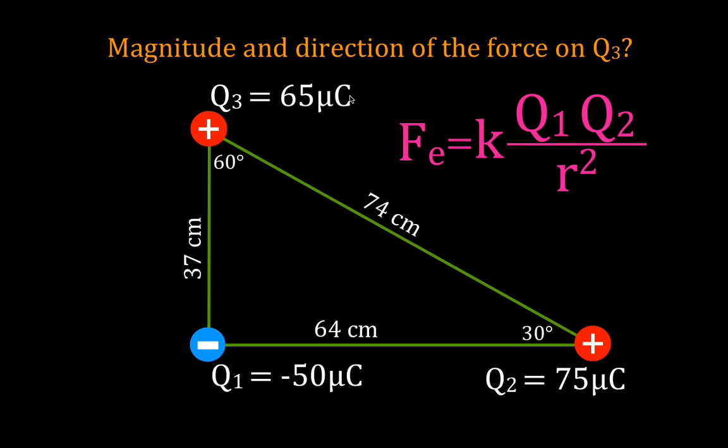This is Q3. Q3 is 65 microcoulombs. Q1 is minus 50 microcoulombs, and Q2 is 75 microcoulombs. And again, we want to know the magnitude and the direction of the force, the resultant force, total force on Q3.